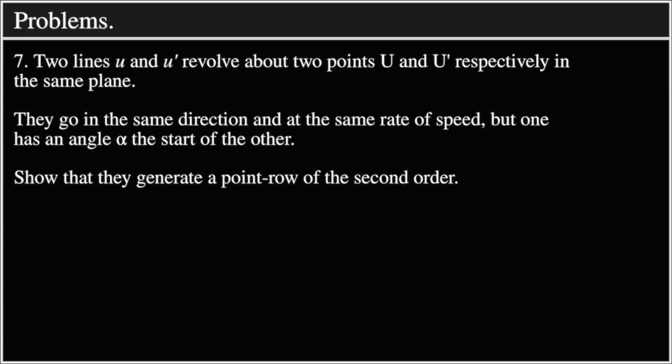Problem 7: Two lines U and U' revolve about two points U and U' respectively in the same plane. They go in the same direction and at the same rate of speed, but one has an angle alpha the start of the other. Show that they generate a point row of the second order.